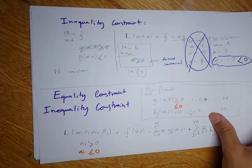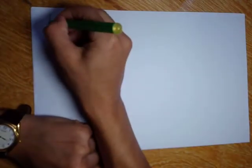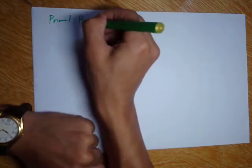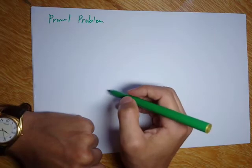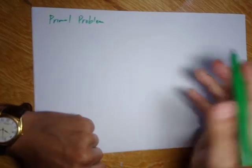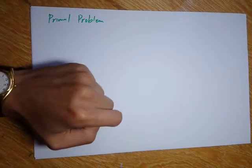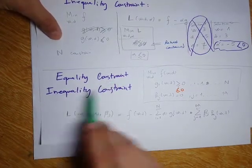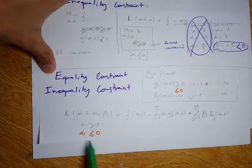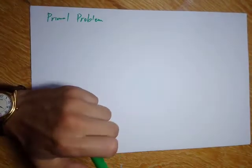Welcome back. I will talk about the primal and the dual problem. The primal problem is just the Lagrangian that we have been discussing for equality constraints, inequality constraints, and when we have both. For example, for the case of equality and inequality constraints, this is the primal problem.